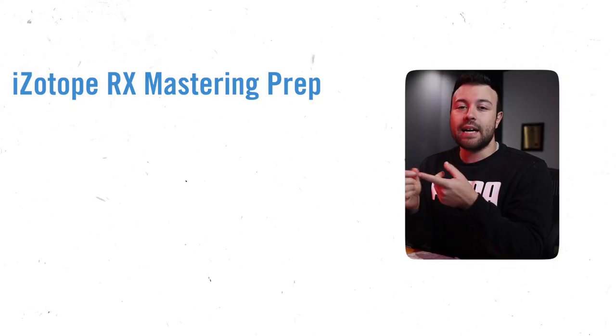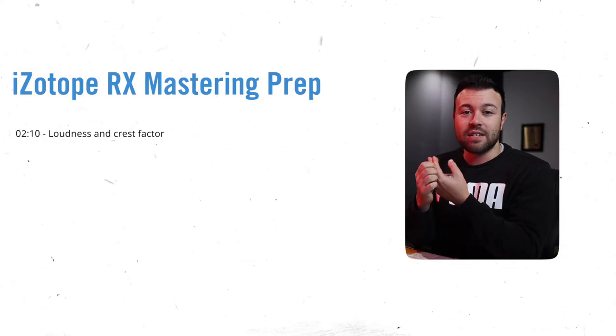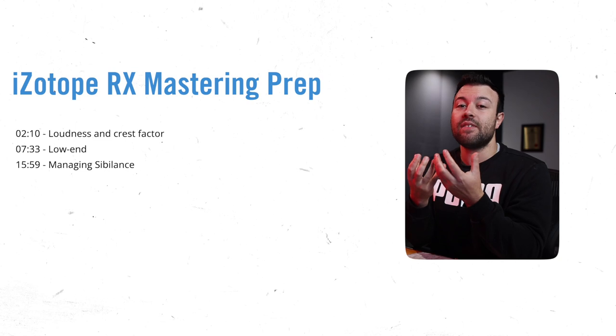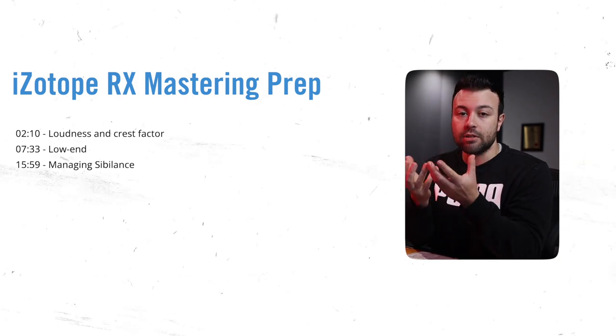There are three key elements of a mix which strongly affect my processing decisions in my mastering chain: the dynamics or crest factor of the material, the low end balance, and whenever there is excessive sibilance. Those three pain points are also common issues mixing engineers try to deal with and improve in their mixes. More often than not, before mastering I'm actually using iZotope RX not necessarily to prep the mixes, but to surface a detailed analysis and give feedback to my clients ahead of amending the mixes.